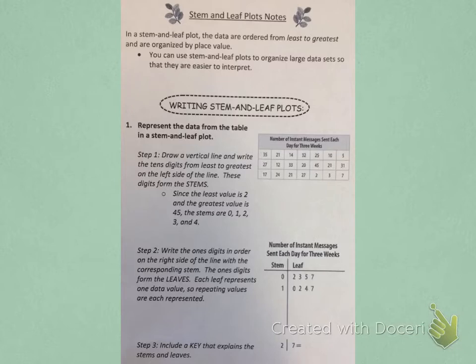Step one is to draw a vertical line and write the tens digits from least to greatest on the left side of this line. These digits form the stems. So if we look over here, we've drawn our vertical line and on the left side we have the stems.